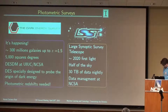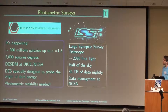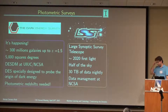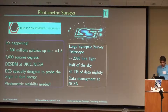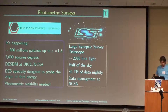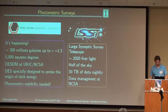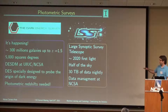There are two big surveys that are very important for astrophysics and for Illinois. One is the Dark Energy Survey, which is actually happening right now — they started the official survey in September of this year, and they already have data. They expect to observe roughly 300 million galaxies up to redshift 1.5, covering 5,000 square degrees, with all data management done here at the NCSA. One of the main goals of the Dark Energy Survey is to probe the origin of dark energy, and photometric redshifts are needed because you don't have full spectral information.